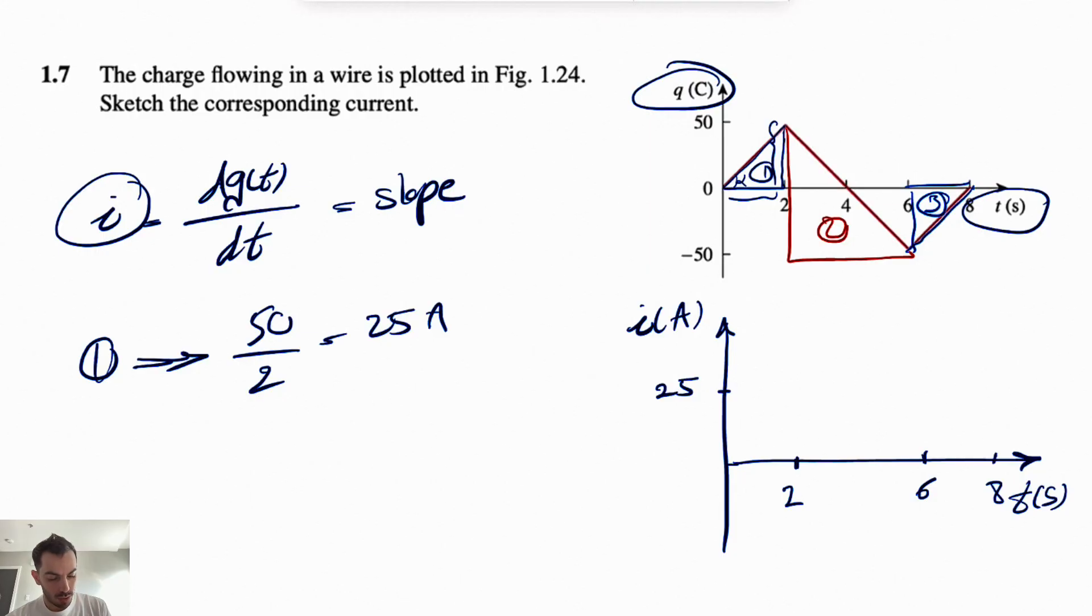So the second one, I showed it with red. We're going to have the bigger right triangle. So this side is going to be 50 plus 50 or 100, and this side is 6 minus 2, which is 4. So that's going to be 100 divided by 4, and we can see that the slope is negative. So it's going to be -100 divided by 4, or -25 amps.